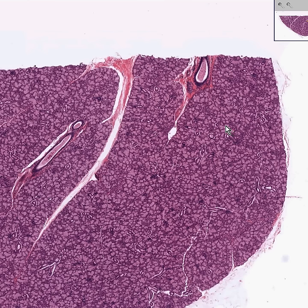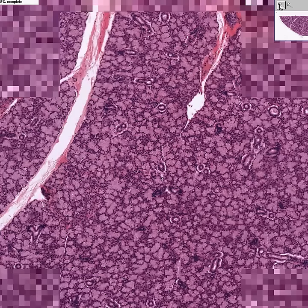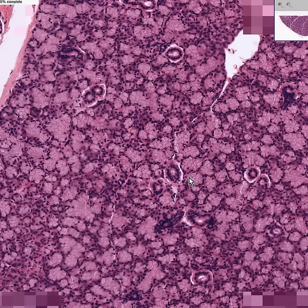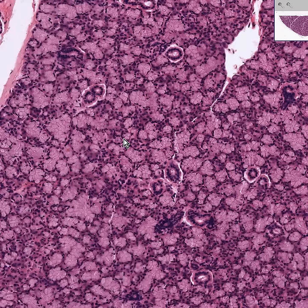Notice that in contrast to the parotid gland, which was a hundred percent serous, and the submandibular gland, which was 50 or 60 percent serous, this particular gland is almost all mucinous. So this by definition makes it a sublingual gland, and like the other ones it does have a few serous elements or acini left, but most of them are mucinous.